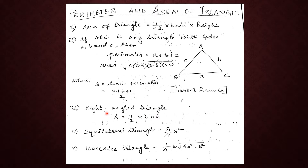Next we have a right-angle triangle. In the case of a right-angle triangle, at least one of the angles is 90 degrees. So the area is equal to half into base into height, and thus we can find out the area of the right-angle triangle.